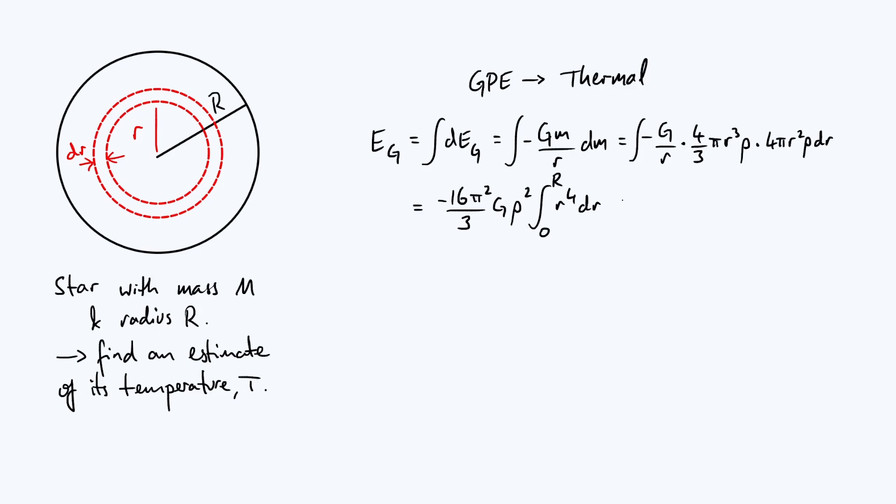Then when you do the integral, you just get capital R to the five over five, and you put it all together. And so our overall expression is minus 16 pi squared over 15, because the three has been multiplied by five on the bottom. Then you've got G rho squared big R to the five.